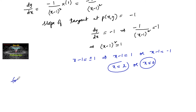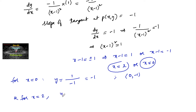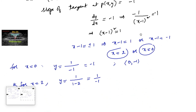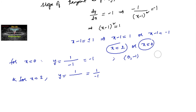For x = 0, y = 1/(0 - 1) = -1, so one point is (0, -1). When x = 2, y = 1/(2 - 1) = 1/1 = 1, so another point is (2, 1). At these two points we can find the tangents whose slope is negative 1.